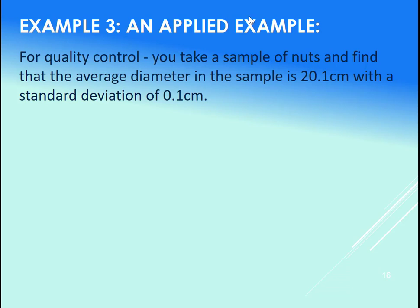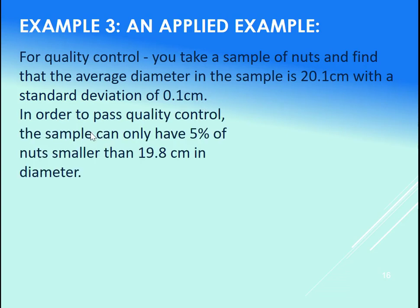So what you do to perform quality control: you take a sample. So in this case we're going to sample the nuts and find an average diameter and standard deviation for that. In our case, the average diameter is 20.1 centimeters with a standard deviation of 0.1. In order to pass quality control, the sample can only have 5% of the nuts smaller than 19.8 centimeters in diameter.